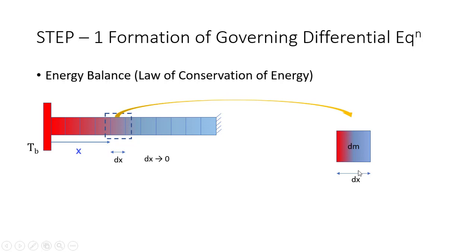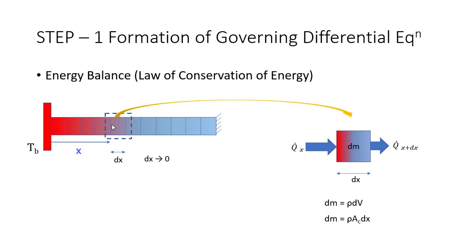The mass is nothing but density times volume. In order to get the energy balance, heat flows in from the left face and heat flows out from the right face. The difference between these two heat transfers is stored in the element, causing a rise in energy and consequently a rise in temperature of this element. The mass dm equals density times volume dV, and dV equals the cross section area A_c times the element thickness dx, so dm equals rho times A_c times dx. In general, energy in minus energy out equals energy stored by the element.